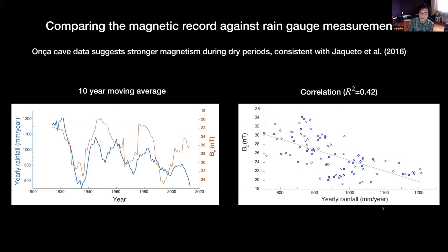This isn't too surprising. Although not geographically very close to the speleothem Jaqueto analyzed, it is in the same kind of environment. Maybe it is the dry years and the increased mobilization of dust that really increases the magnetization of the speleothems. One can say there are a lot of other effects here and this isn't the tightest correlation ever, so let's come up with some complementary evidence.